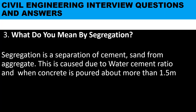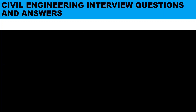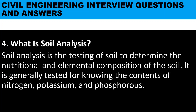Question number three: what do you mean by segregation? Segregation is the separation of cement and sand from aggregate. This is caused due to water-cement ratio and when concrete is poured from more than 1.5 meters.